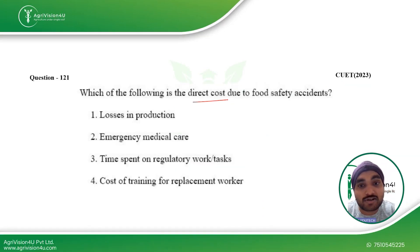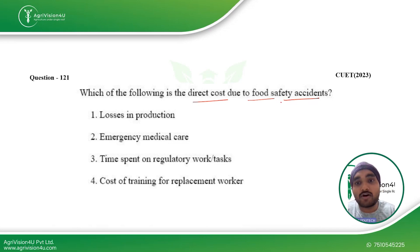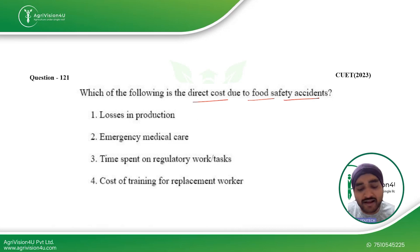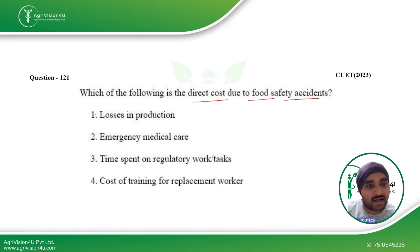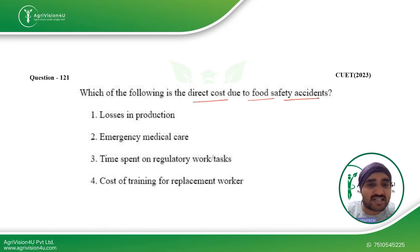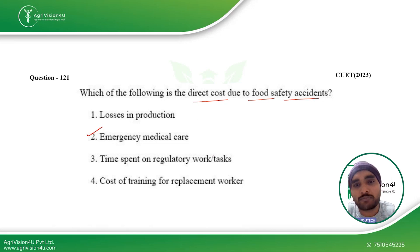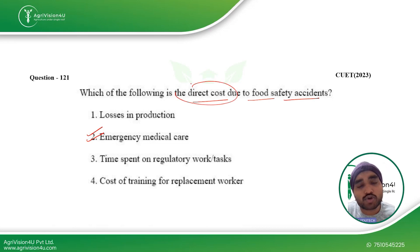The first question: which of the following is the direct cost due to food safety accidents? A food safety accident means a breach in the safety of food causing some hazard. Looking at the options — losses in production: not likely since machines and raw material supply are stable. Emergency medical care: yes, this can be a direct cost. Time spent on regulatory work: present but not that significant. Cost of training for replacement workers: not that significant since workers are already trained. So 'emergency medical care' is the answer.